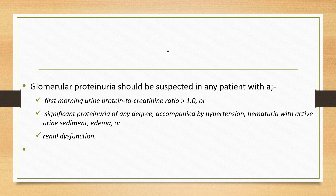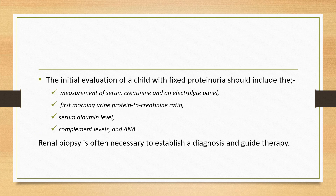Glomerular proteinuria should be suspected in any patient with a first morning urine protein to creatinine ratio greater than 1, or significant proteinuria of any degree associated with hypertension, hematuria with active urine sediment, edema, or renal dysfunction. Disorders characterized primarily by proteinuria include idiopathic nephrotic syndrome, secondary causes of nephrotic syndrome, focal segmental glomerulosclerosis, mesangioproliferative glomerulonephritis, and membranous nephropathy. Other renal disorders that can include proteinuria are post-infectious glomerulonephritis, IgA nephropathy, SLE, Henoch-Schönlein purpura nephritis, and Alport syndrome. The initial evaluation of a child with fixed proteinuria should include serum creatinine, electrolyte panel, first morning urine protein to creatinine ratio, serum albumin, complement levels, ANA, and sometimes renal biopsy to establish the diagnosis and guide therapy.